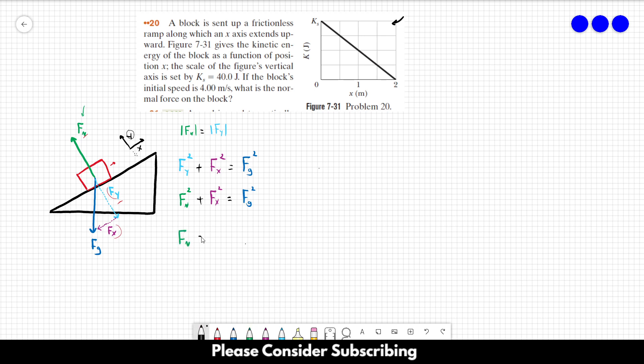So we can write Fn squared plus Fx squared equals to Fg squared. So we want to isolate Fn. So Fn is equal to the square root of Fg squared minus Fx squared. So if we can find the gravitational force and Fx, we can find the normal force.